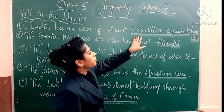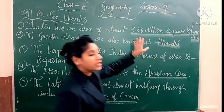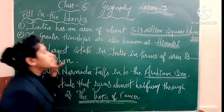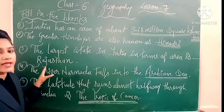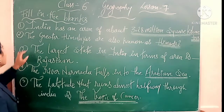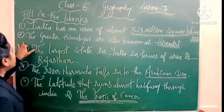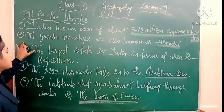3.28 million square kilometer — ye hai aapka pehle fill in the blanks ka answer. Ab dekho number 2 fill in the blanks.